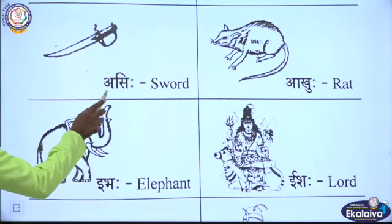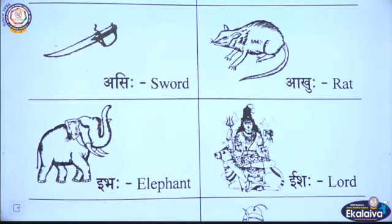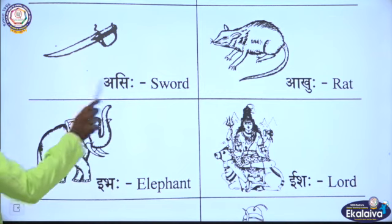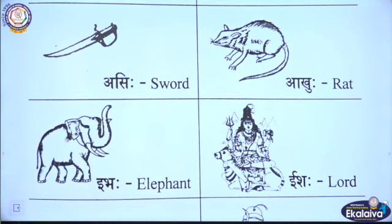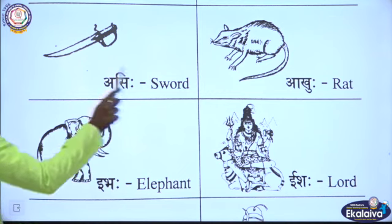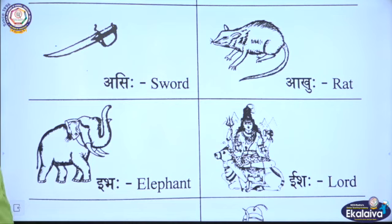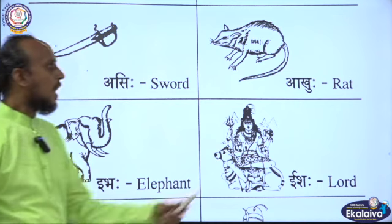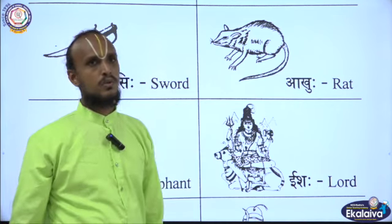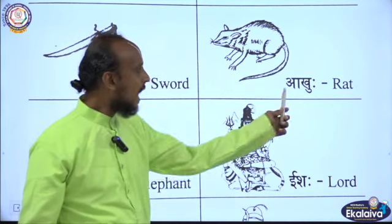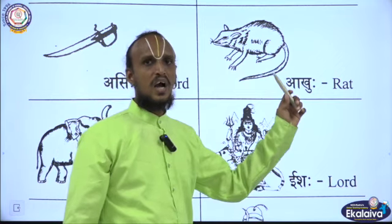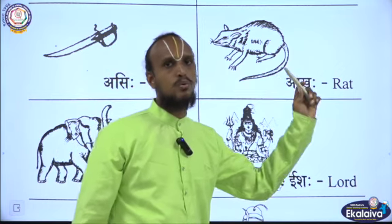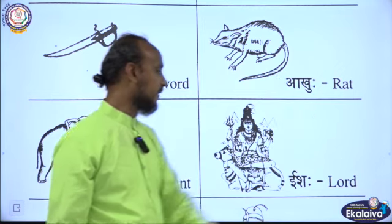Asihi, Asihi — sword. Akuhu, Akuhu — rat.